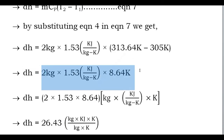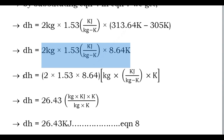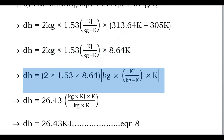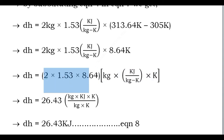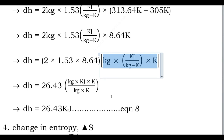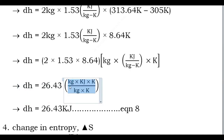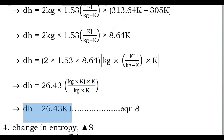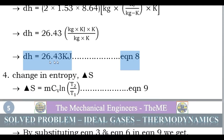Splitting numerical and unit terms: ΔH = 2 × 1.53 × 8.64 × kg × kJ/kg·K × K. Here 2 × 1.53 × 8.64 = 26.43, and kg × kJ/kg·K × K simplifies to kJ (kg and K cancel). Therefore ΔH = 26.43 kJ. Consider this as Equation 8.